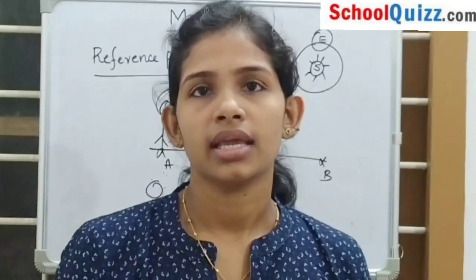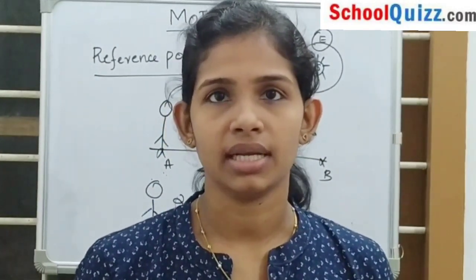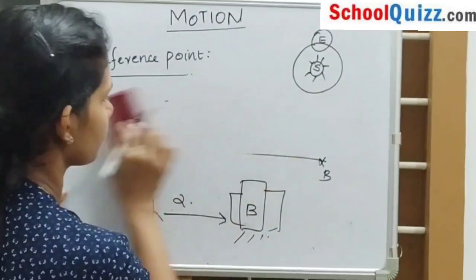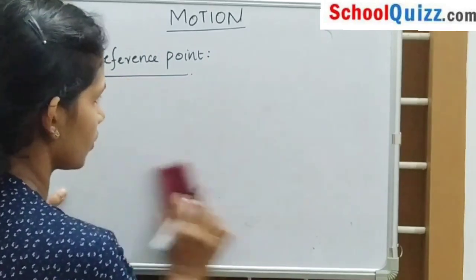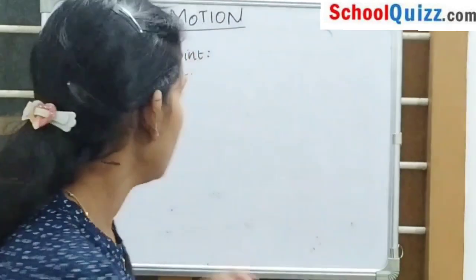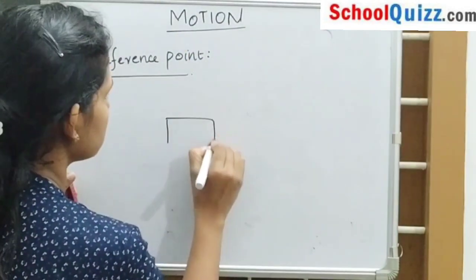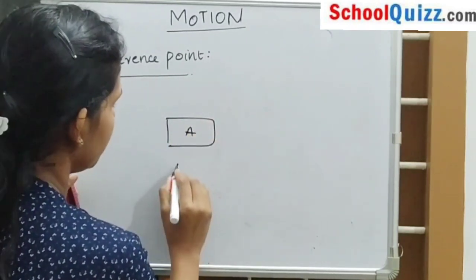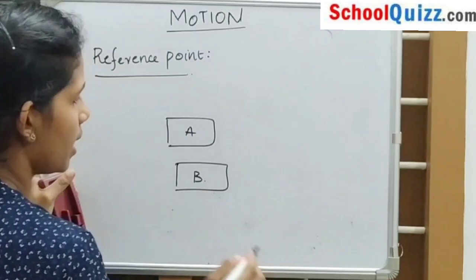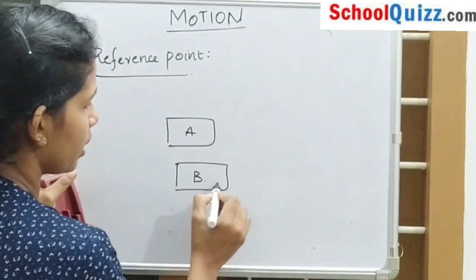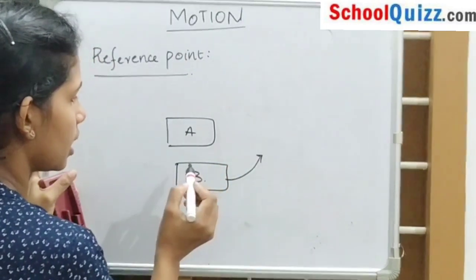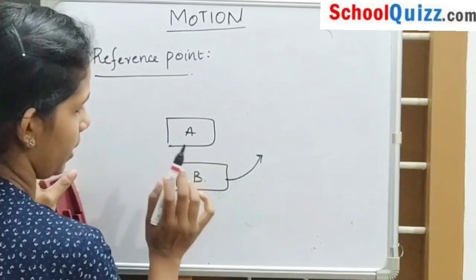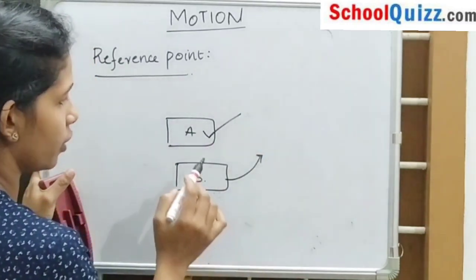Generally, we can take a reference point as a stationary object like a tree, building, etc. In a moving object also we can take a reference point. Consider an example: if two cars, car A and car B, move in a row, and car A overtakes car B, then we can say that car B moves with respect to A. So here A is the reference point for car B.